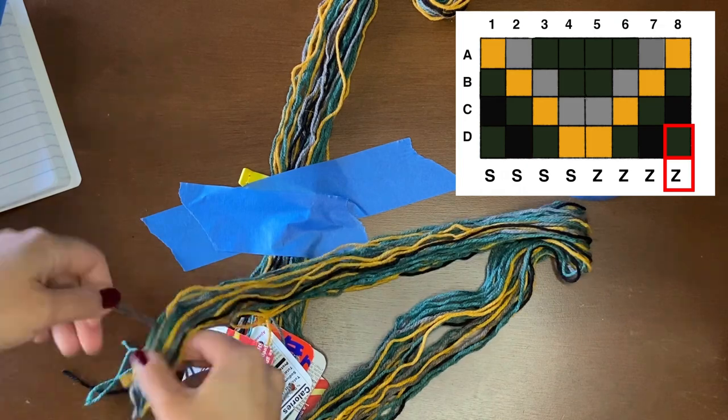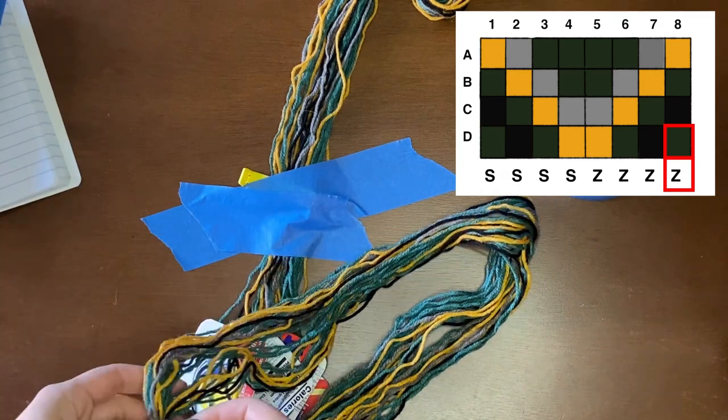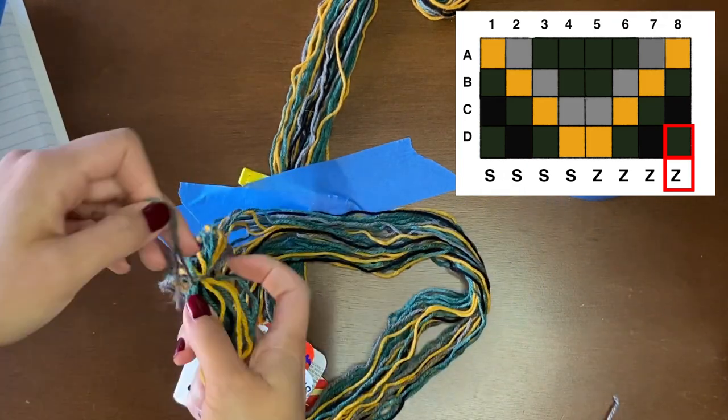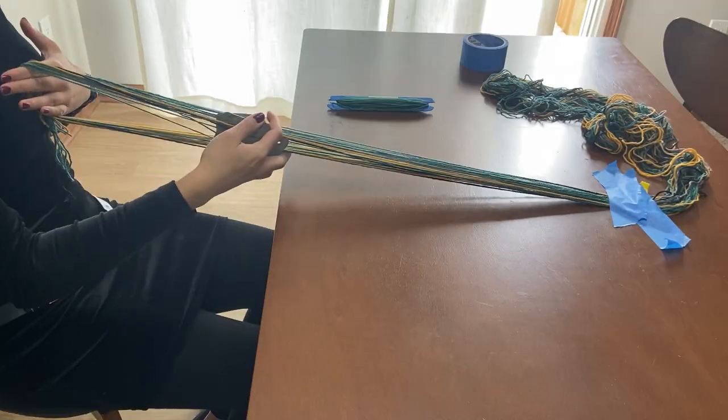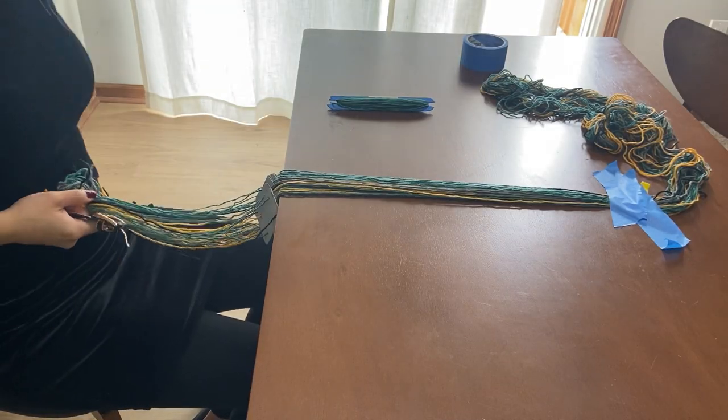Once the cards have been threaded, tie the loose ends of yarn together. Next, tie a belt around your waist and slide it through the bundle to secure it and create tension on the threads.